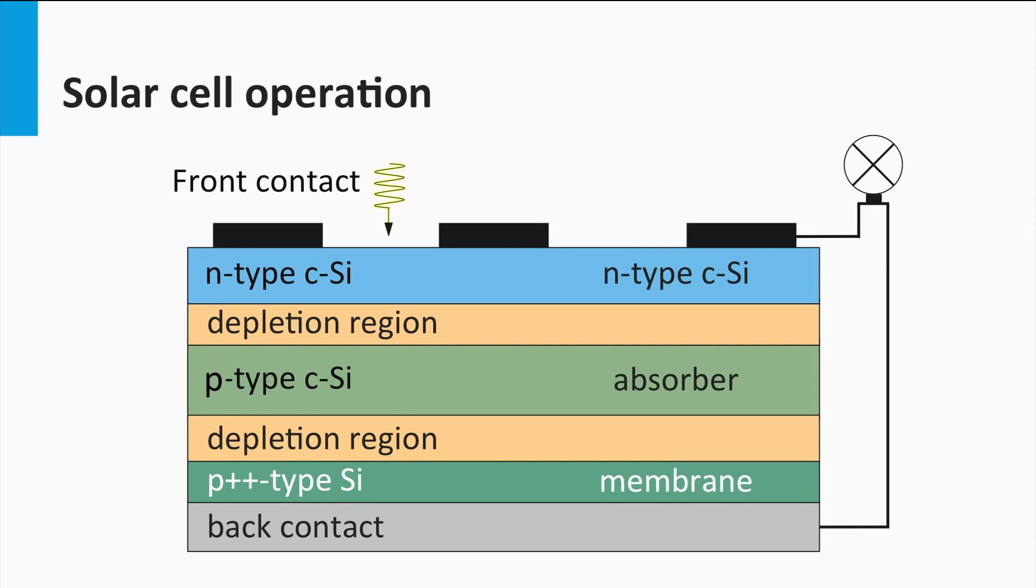The light enters the solar cell from the front side, in this illustration that is the top side. The light is transmitted into the absorber layer, where its energy is absorbed. The energy is used to excite charge carriers in the semiconductor material, which are a negatively charged electron indicated by the red dot and a positively charged hole indicated by the blue dot.